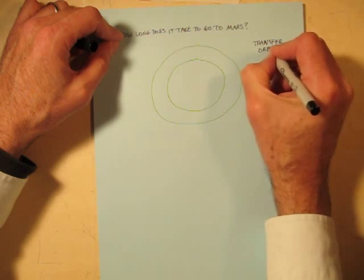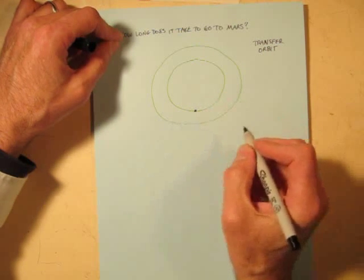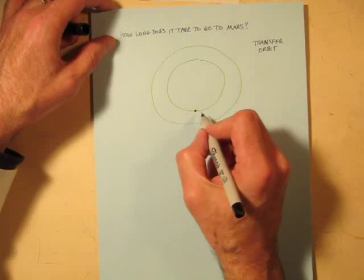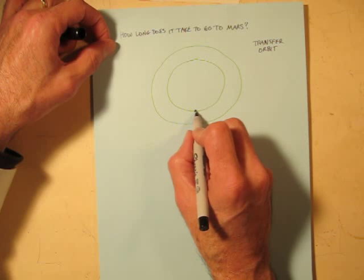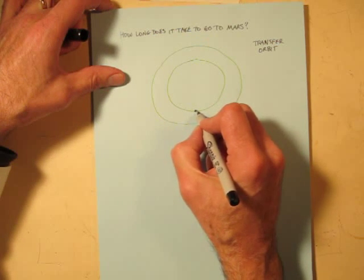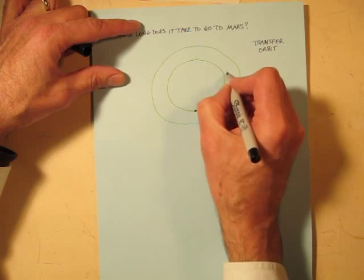Transfer orbit. You start when Earth is here. And as you depart Earth, you fire your rockets for a few minutes to give your spacecraft a little kick so that it ends up going slightly faster than Earth already is in its orbit. And that will cause our spacecraft to go out like this. Smooth curve.